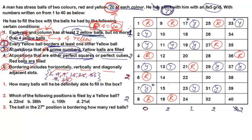Row 2 will have exactly one yellow ball. Yellow balls at 17 and 33 both need to border a yellow ball. Since all adjacent column slots are filled with red balls, the only position that borders both 17 and 33 is slot 26. Placing a yellow ball at slot 26 satisfies condition 2 for both. This is the only possibility.